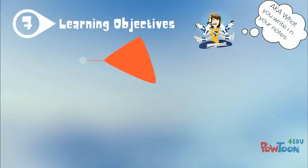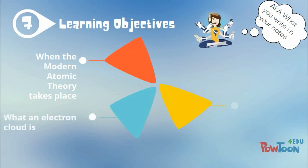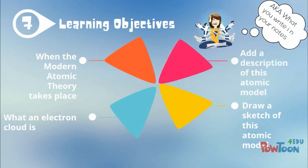Here are your learning objectives for your notes. When the Modern Atomic Theory takes place, what an electron cloud is, draw a sketch of this atomic model, add a description of this atomic model.